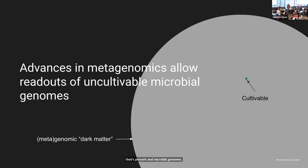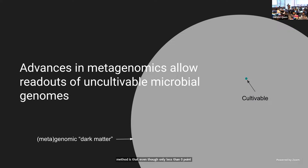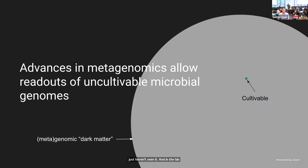About 10 years ago, metagenomics as a method really became popularized. Metagenomics is a method in which we take a sample and, without needing to culture it, we can just extract DNA and then sequence that DNA. An important aspect of this method is that even though only less than 0.1% of microbes are cultivable, we now have access to this extremely diverse and unbiased dataset that we call metagenomic dark matter.